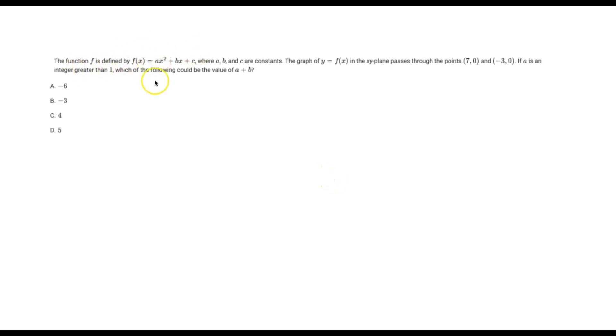So it says the function f is defined by the standard form of quadratic ax² + bx + c, where a, b, c are constants. When it's graphed, it passes through these points. So these (7,0) and (-3,0), these are the x-intercepts.